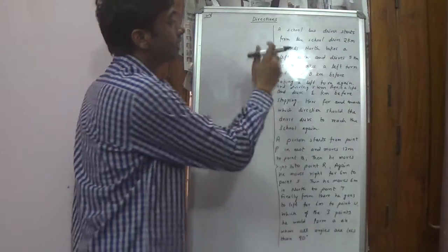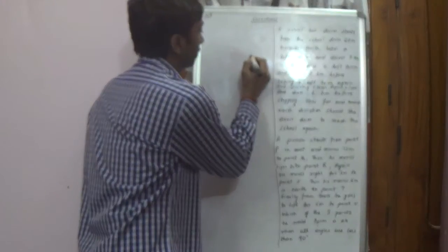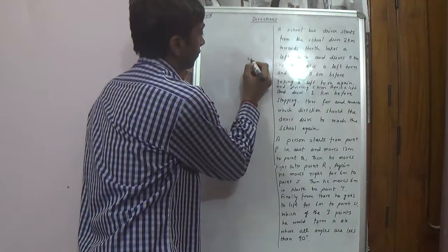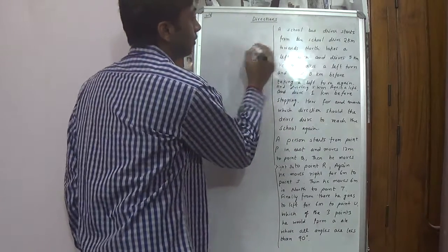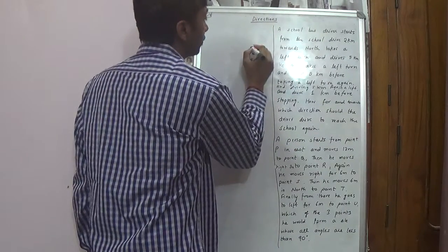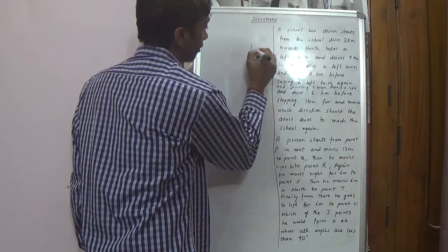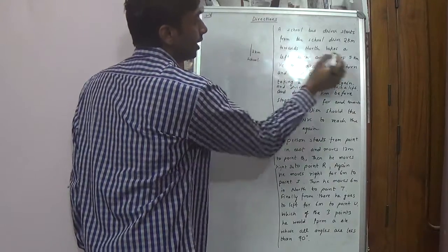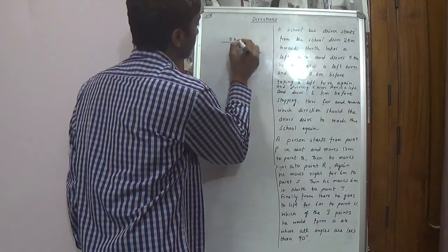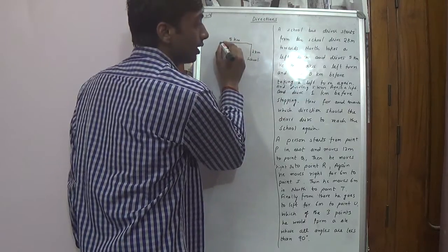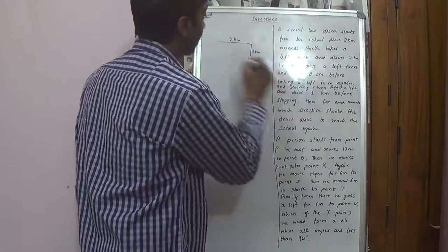A school bus driver starts from the school. After knowing the topic I am moving on to the question here. The school drives two kilometers towards north. North is this direction, two kilometers, and takes a left turn and drives five kilometers. From there, he takes a left turn and drives eight kilometers.